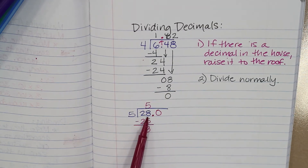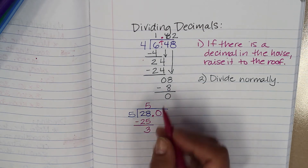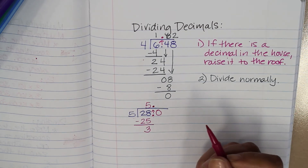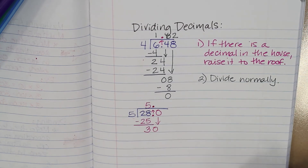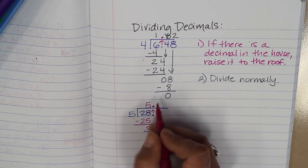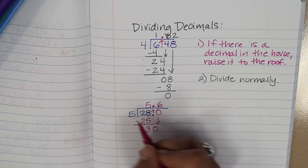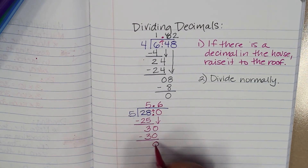28 and 0 tenths is still the same number — I have not changed this number at all. But now I have a decimal, so I'm going to raise my decimal to the roof like I did last time, and I'm going to bring down my 0. Now, 5 goes into 30 six times. 6 times 5 is 30, and now I have no remainder.